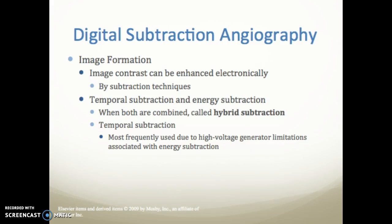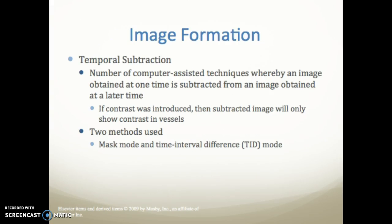Image contrast can be enhanced electronically by subtraction techniques. There are two types: temporal subtraction and energy subtraction. When both are combined, it is called hybrid subtraction. Temporal subtraction is more frequently used due to high-voltage generator limitations associated with energy subtraction. There are two subtypes of temporal subtraction: mask mode and time interval difference mode.